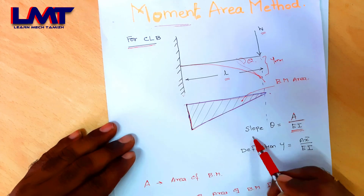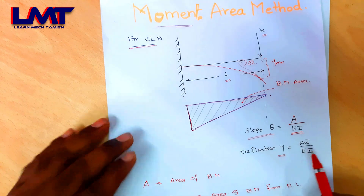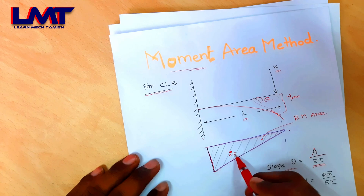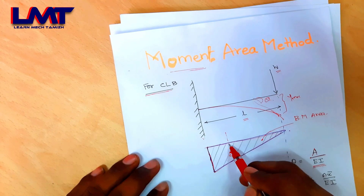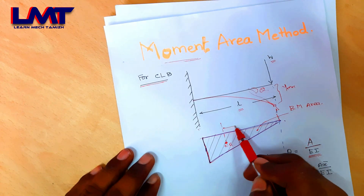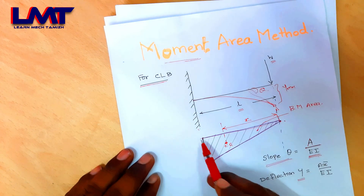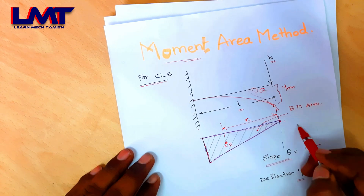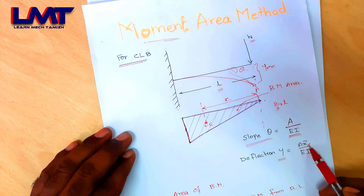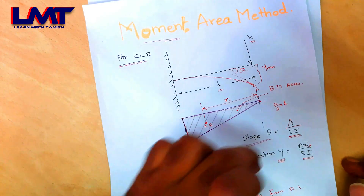The maximum slope at the free end is the area of the bending moment diagram divided by flexural rigidity EI. Deflection is A-bar into X-bar divided by EI, where X-bar is the distance to the center of gravity. For a triangle, the centroid is at 2/3 of the length from the sharp edge.